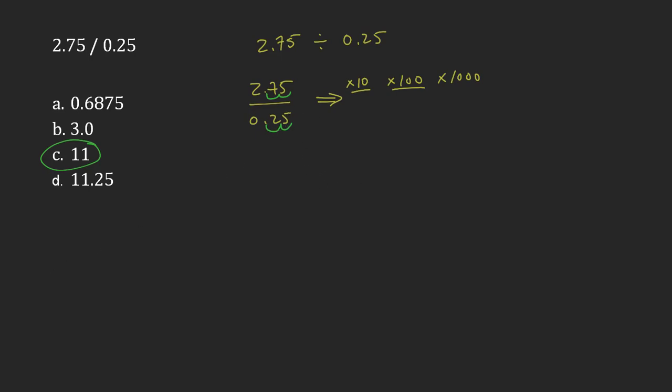So let's try that out. 2.75 times 100 is going to be 275. And then 0.25 times 100, it has to be the same as what I'm multiplying on the top. Whenever you're changing a fraction, you have to change the bottom and the top by the same amount. So this is going to be 25.